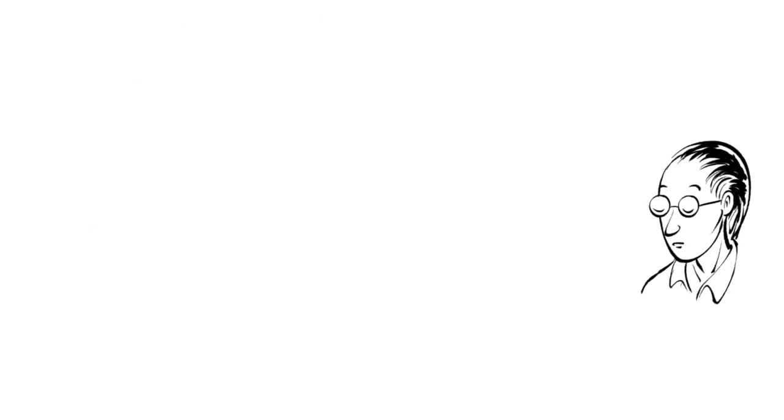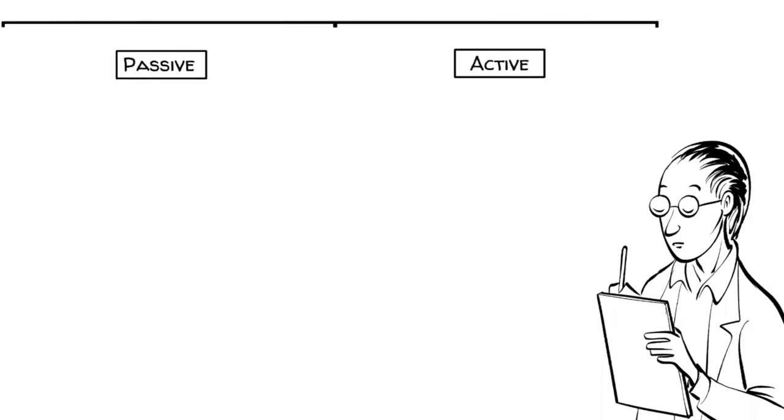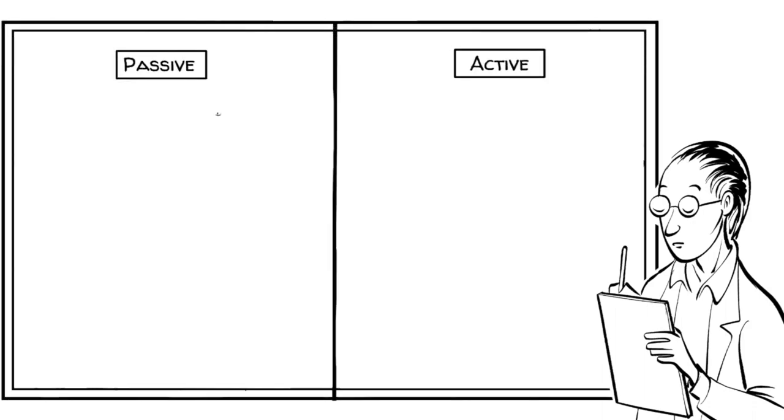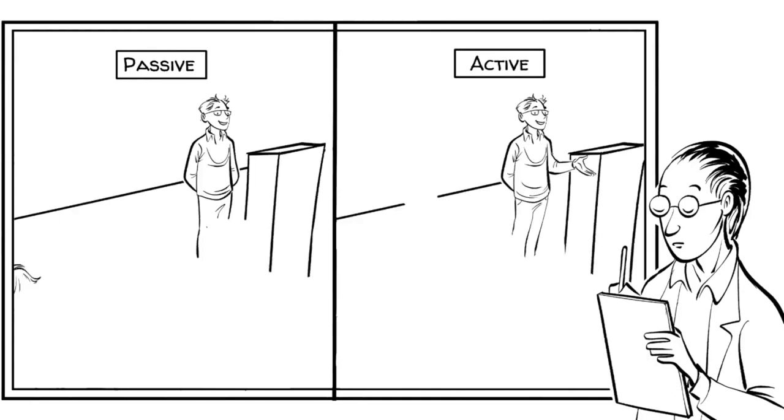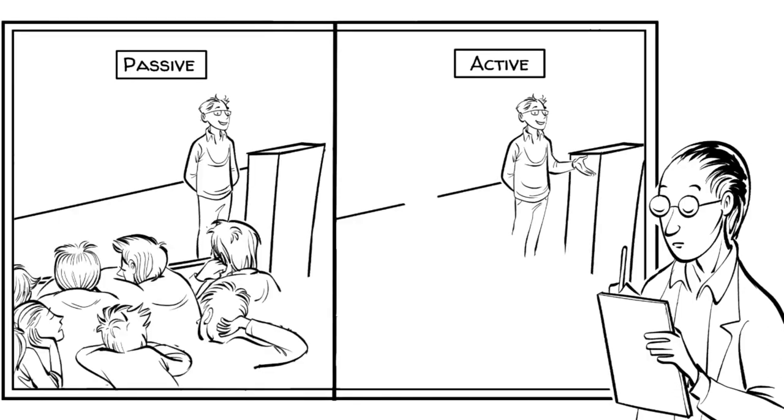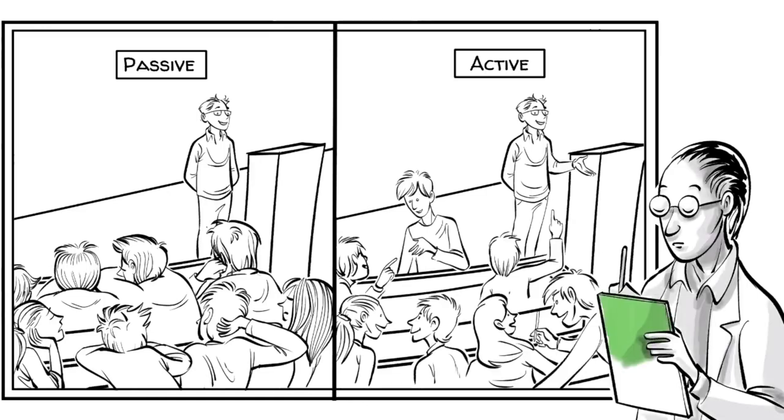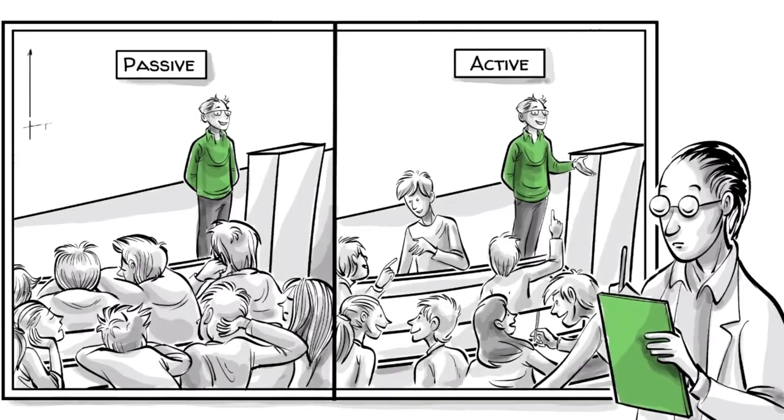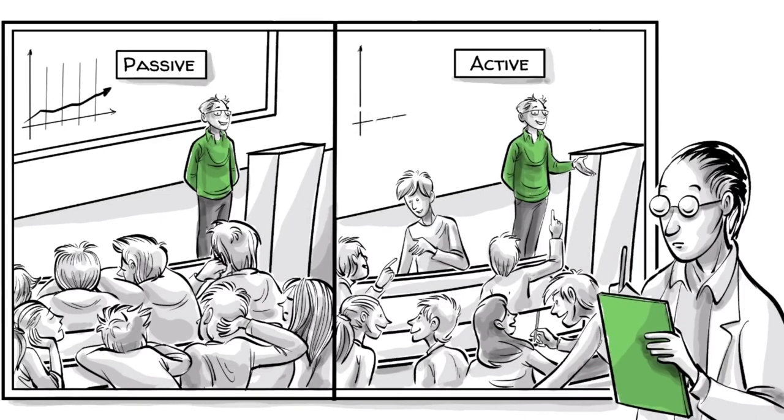A large body of research has shown big differences in the outcomes between passive and active learning. In one carefully executed experiment, physics instructors taught their course in two ways. Some classes were taught in a conventional style, and others using active learning. Even though the teachers were the same and the students were similar, on average the active learners doubled their understanding when they were tested at the end of the course.